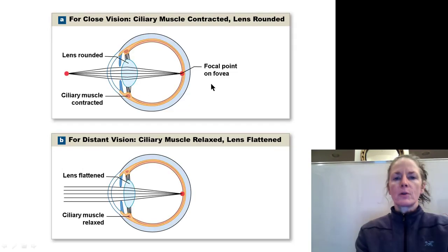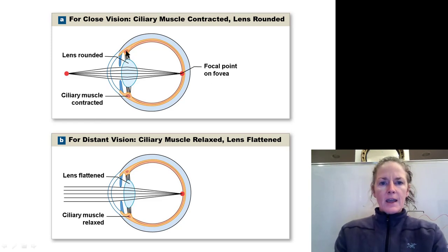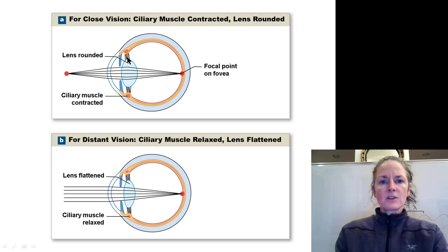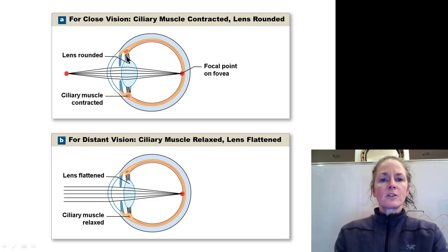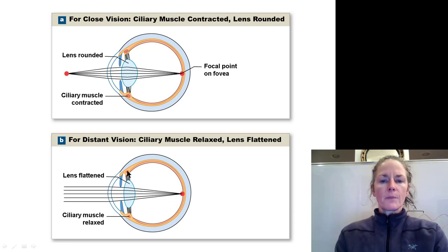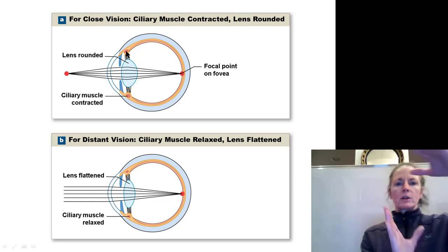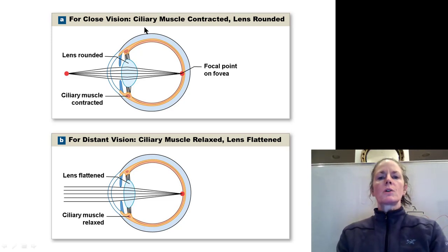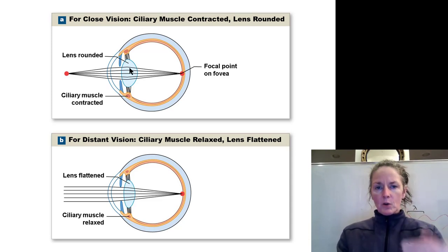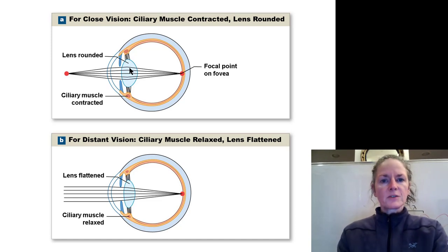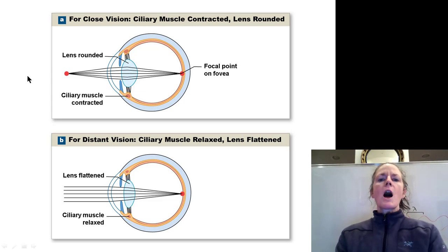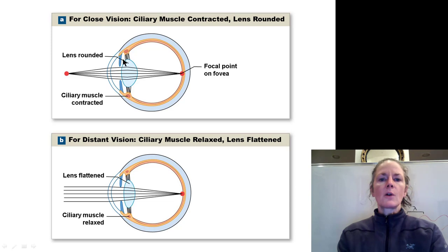Now let's talk about how the eye focuses. We have the ciliary body, which contains the ciliary muscle. The ciliary muscles surround the lens, and the lens is attached to the ciliary body by suspensory ligaments — this zone where the suspensory ligaments hold the lens is called the ciliary zone. The suspensory ligaments have a certain amount of tension determined by the ciliary muscle. The ciliary muscle is a sphincter muscle, so when it contracts, it bulges inward toward the lens.